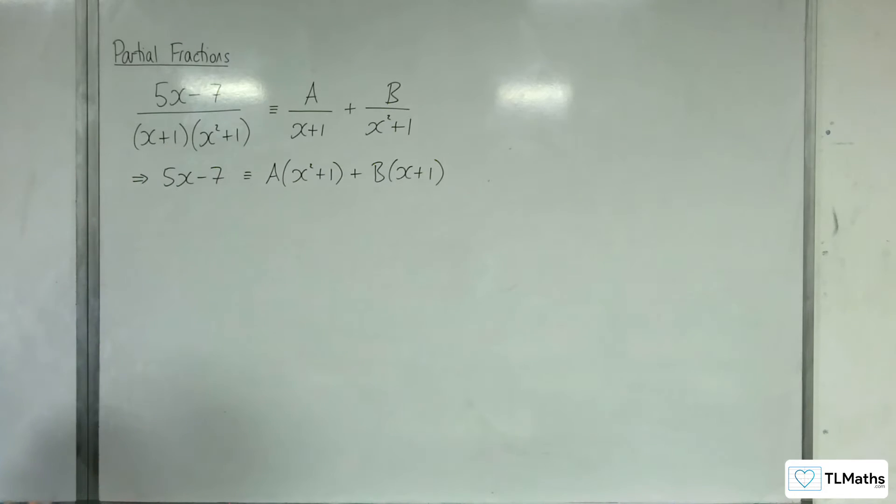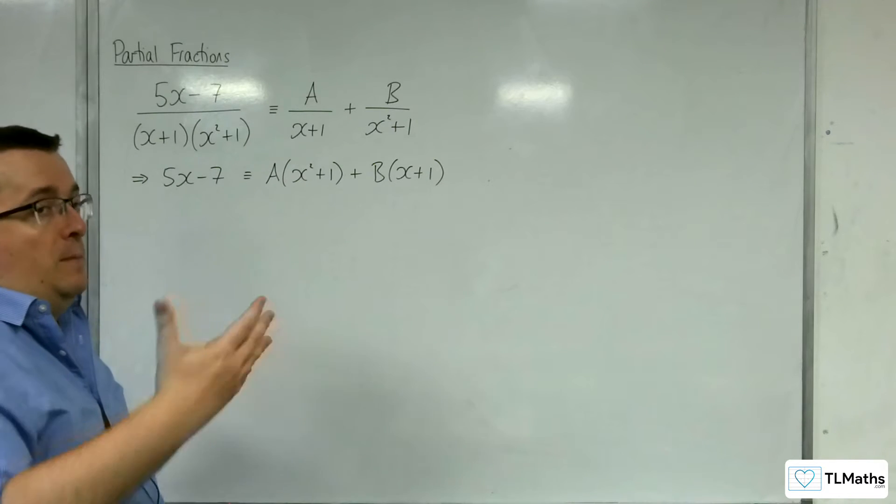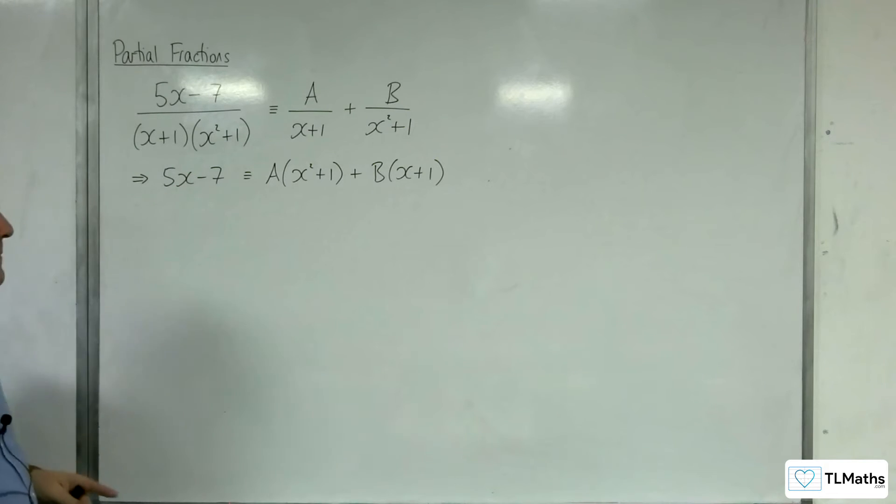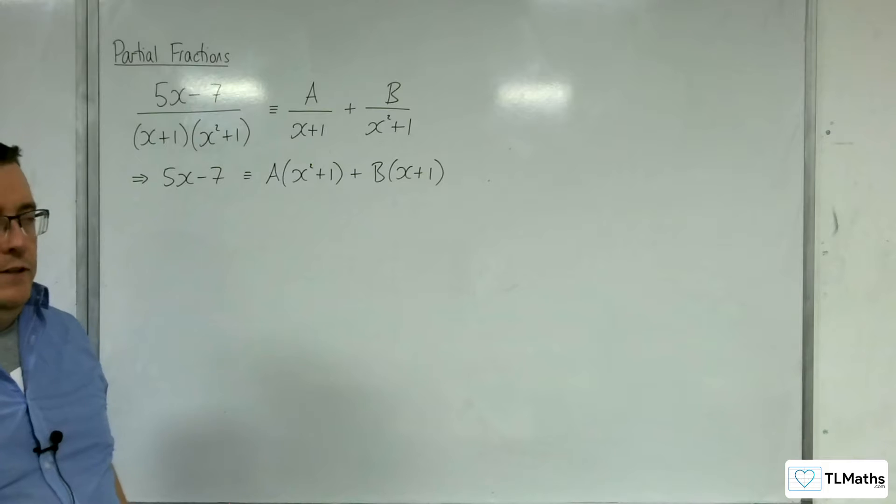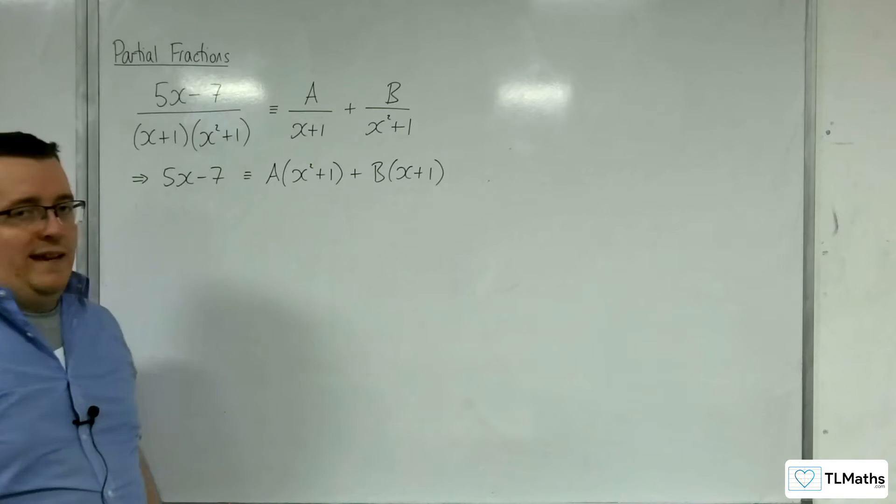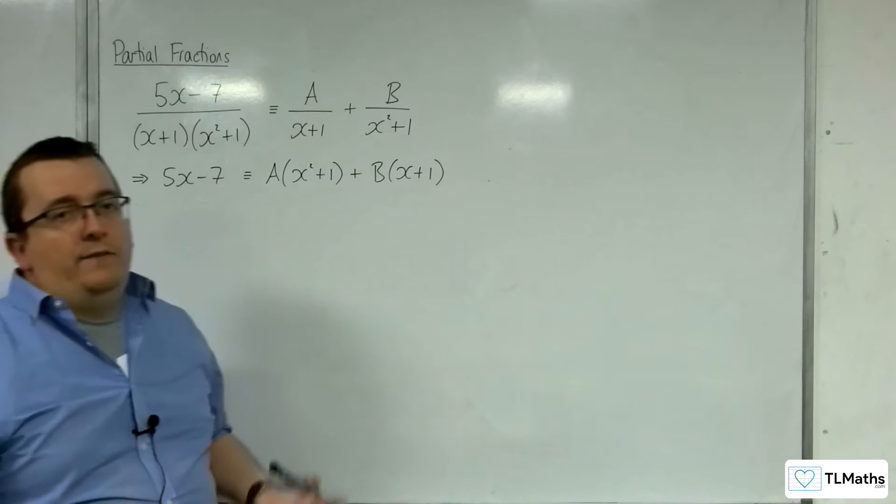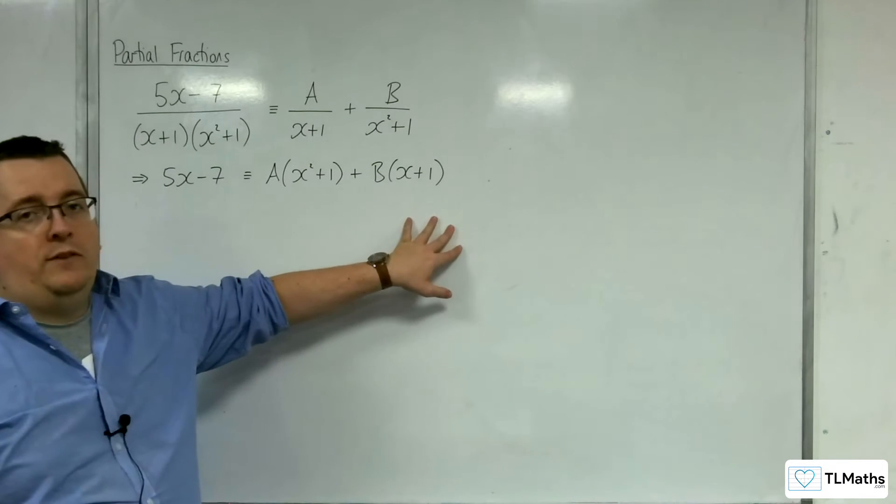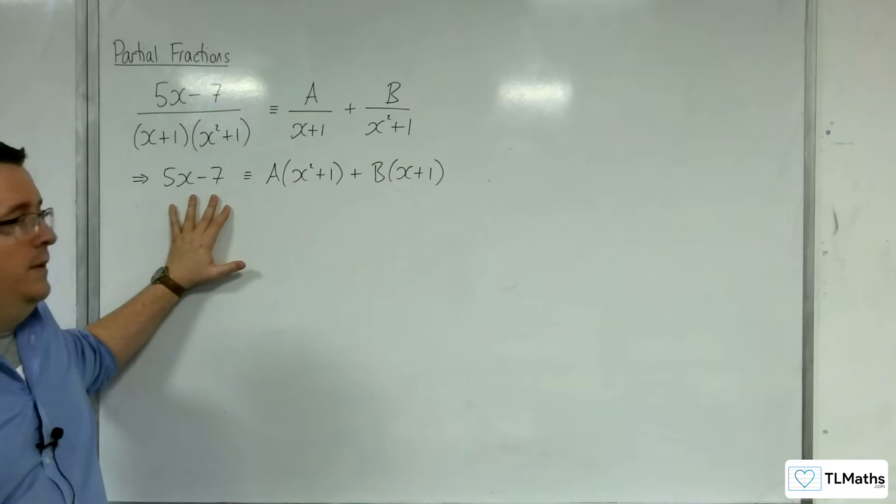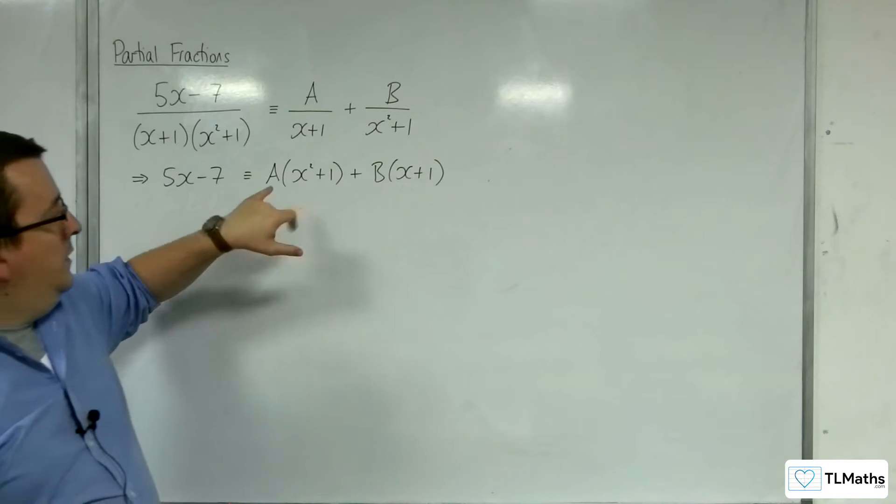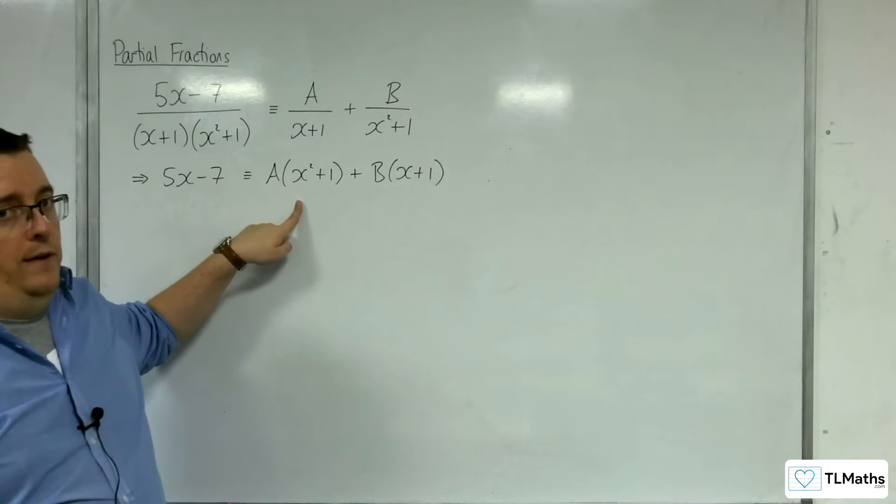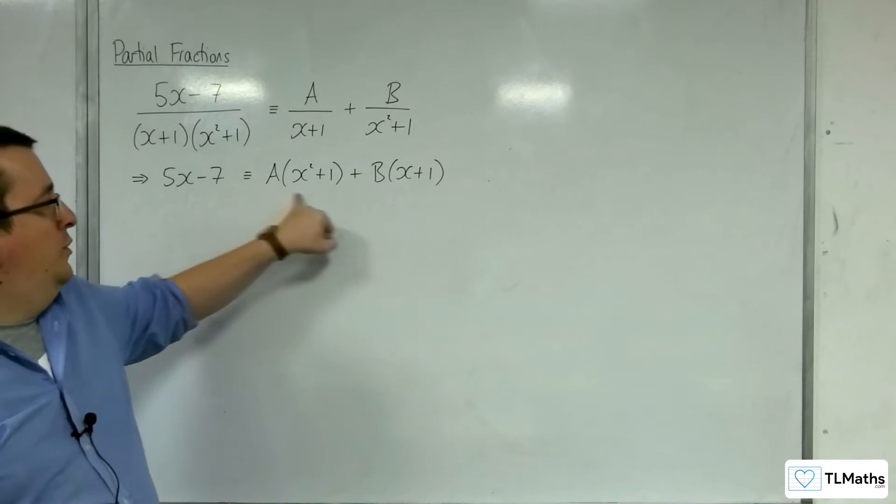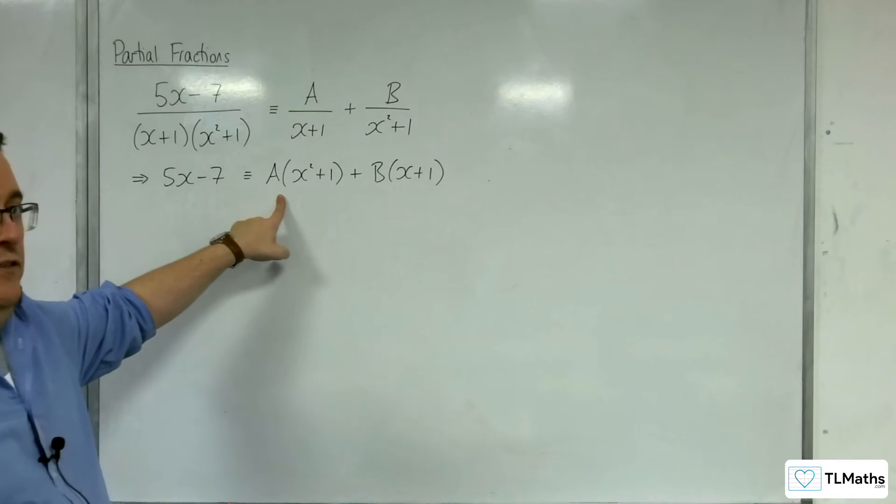Now, the whole idea about comparing coefficients is saying, well, if the left hand side has got to be 5x take away 7 and it's got to be the same as the right hand side, the first thing to identify is that the right hand side can't have a quadratic term because there's no quadratic term on the left hand side. So I know that I'm going to multiply A by x squared. Now if that's the case, then in order to not get a quadratic term, A is going to have to be 0.